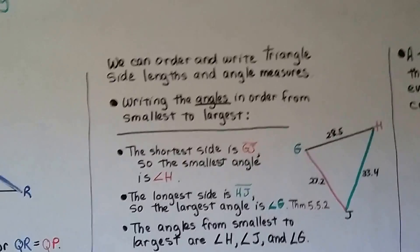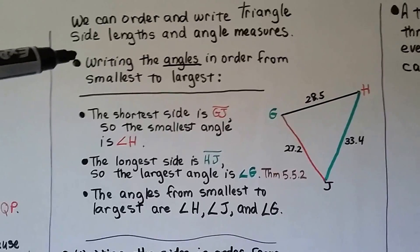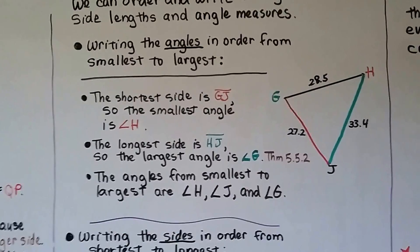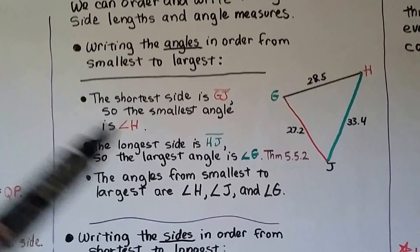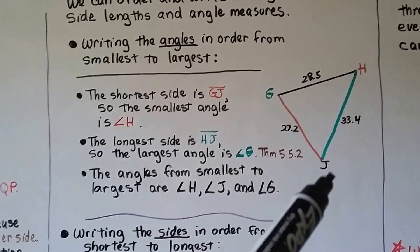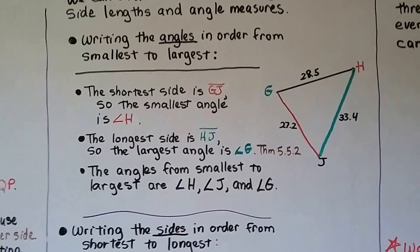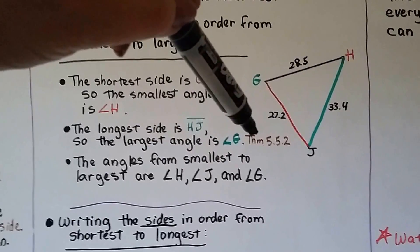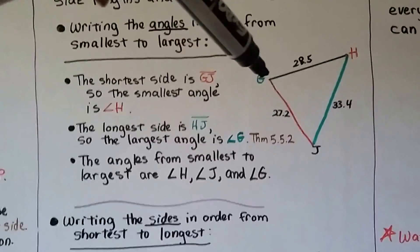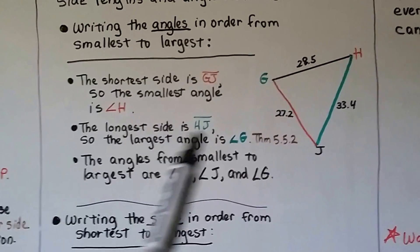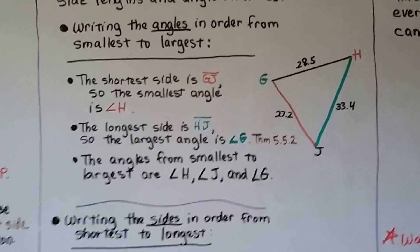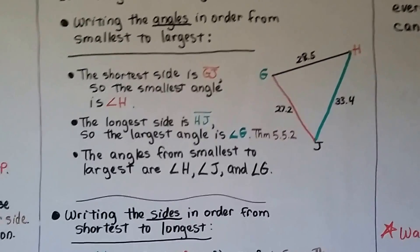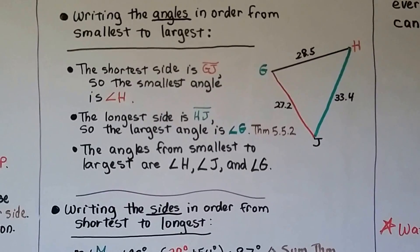We can order and write triangle side lengths and angle measures. Writing the angles in order from smallest to largest — we don't have angle measures, only side lengths. The short side is GJ, so the smallest angle is H, the one opposite it. The longest side is HJ, and by theorem 5.5.2, the longer side is across from the larger angle, so angle G is the largest. The angles from smallest to largest are angle H, then angle J, then angle G.